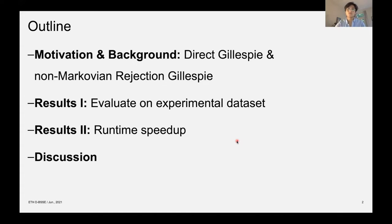The structure of my presentation is as follows. We'll first go into the motivation and the background for direct-Gillespie and non-Markovian rejection-Gillespie. We'll then go into the first set of results where we evaluate the algorithm on an experimental dataset. In the second set of results, we'll look at the runtime speedup, and finally we'll close up with a discussion.